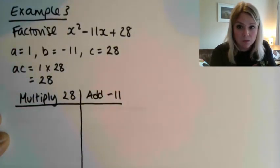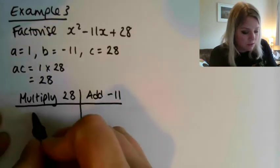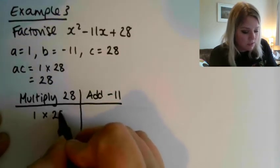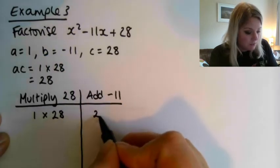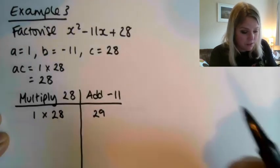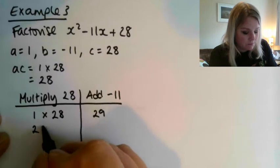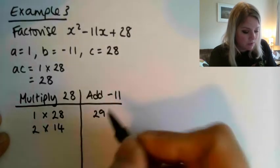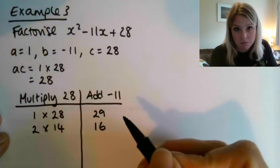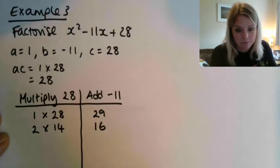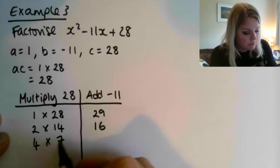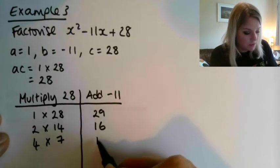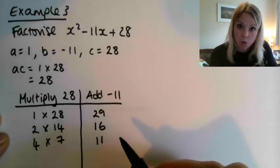Now, let's start going through the factors of 28. So 1 multiplied by 28, if I add those together, I get 29, that is not minus 11. Let's see, 2 and 14, if I add those together, I get 16, again, not minus 11.